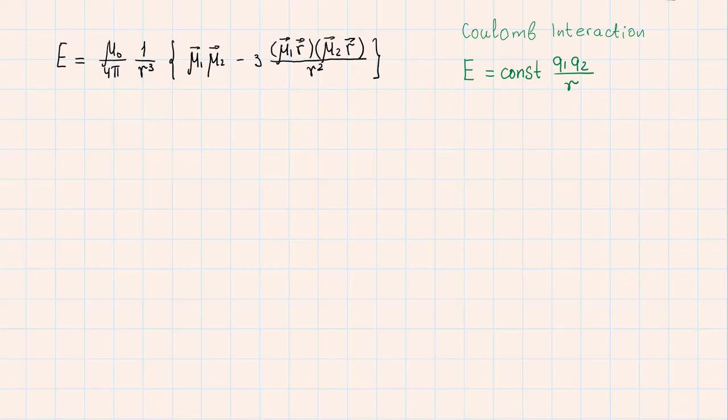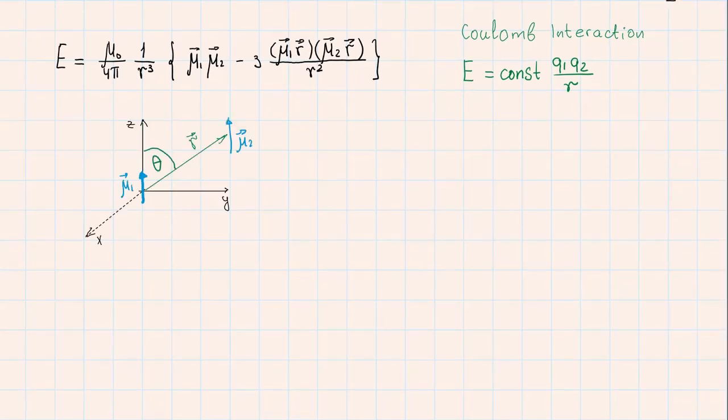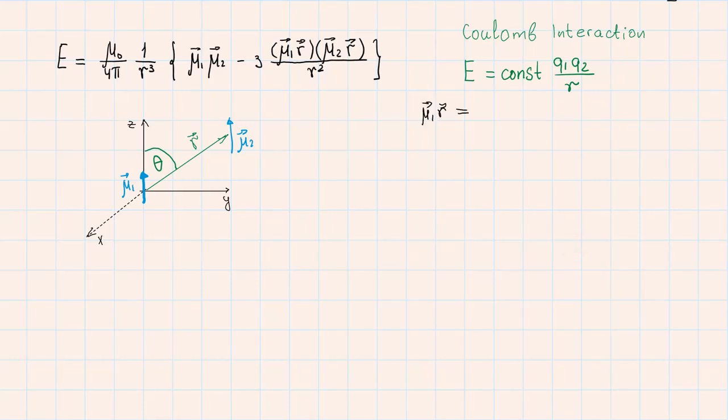Here we consider an important special case when both magnetic moments mu1 and mu2 are oriented along the z-axis of a coordinate frame. And the angle between z-axis and the distance vector is equal to theta. In this case, the expression for the interaction energy can be simplified significantly. Taking into account that the scalar product mu1 with r is equal to mu1 r cosine theta, and the scalar product mu2 with r is also equal to the product of the absolute value of mu2 and r and cosine theta.